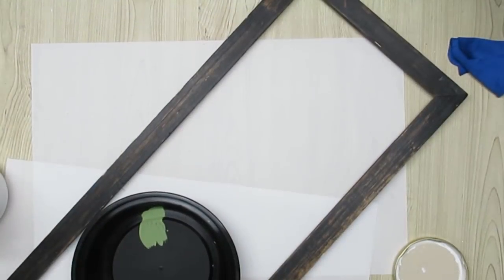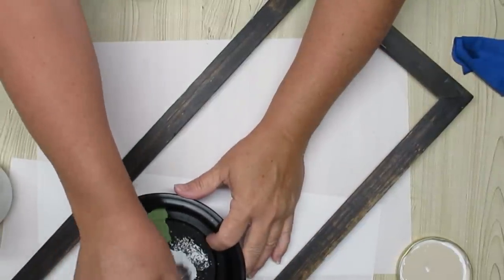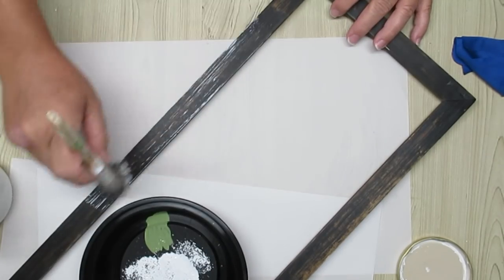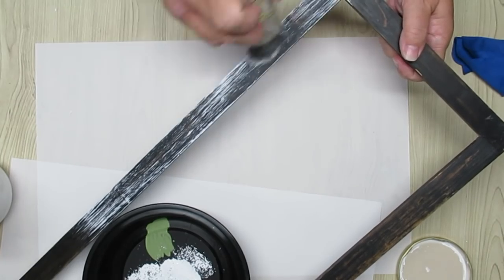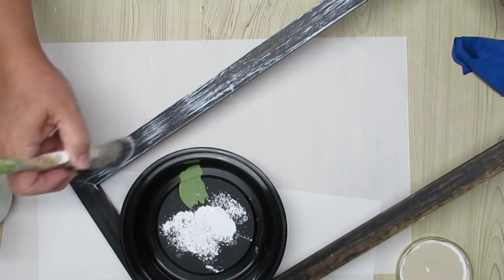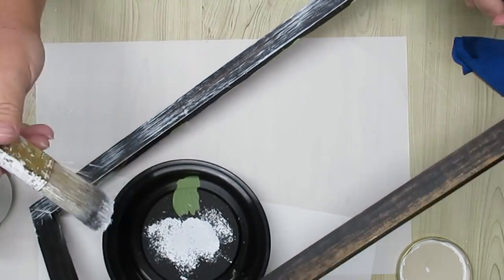My first Trash to Treasure project is using this old frame that I'm repurposing from a project I no longer like or need. I'm just going to be taking some white DIY chalk paint and giving it a light dry brushing. I like the look of it. It has some brown, it has some black on it, but I wanted it to be just a little bit lighter in color.